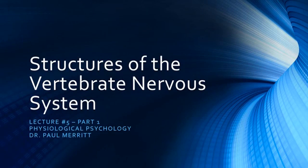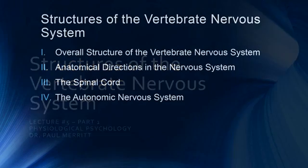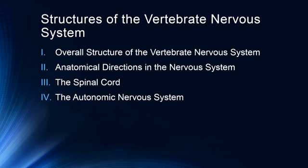Hello and welcome to lecture number five in our ongoing series in physiological psychology. This will be the first part of lecture number five on structures of the vertebrate nervous system. In this first part we'll do an overall overview of structures of the vertebrate nervous system, talk about anatomical directions, the spinal cord, and spend some time on the autonomic nervous system. In part two we will then start to look at the major subdivisions of the vertebrate brain.